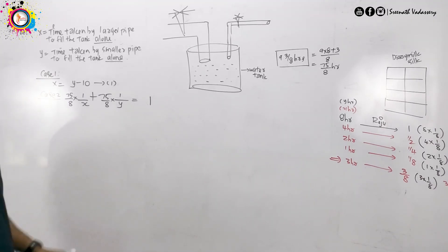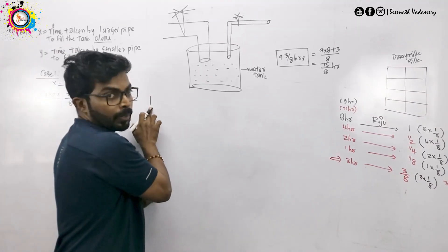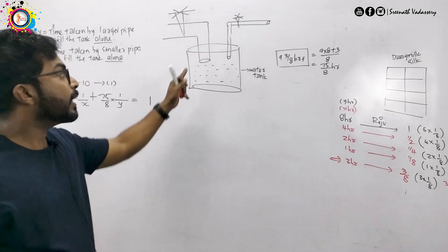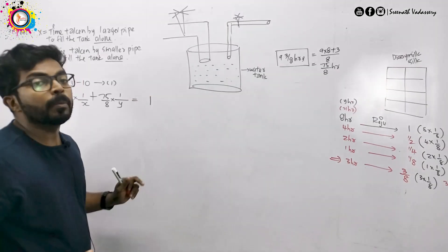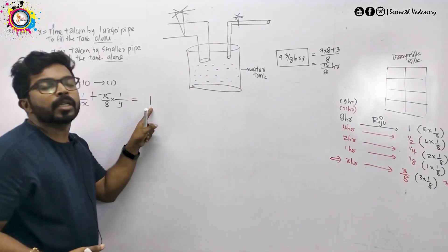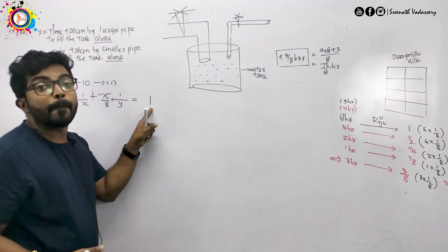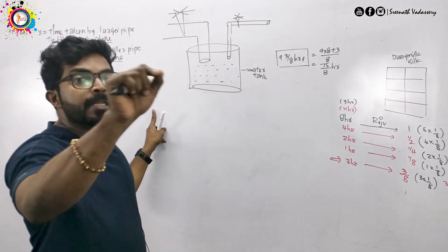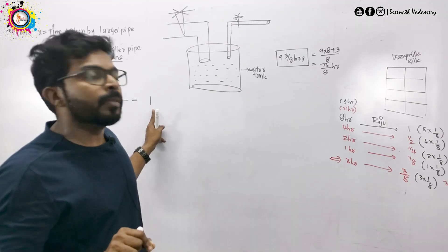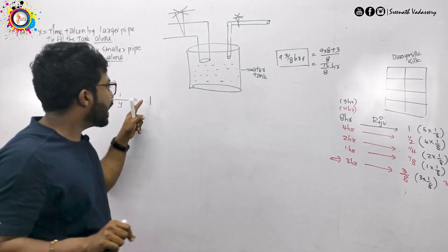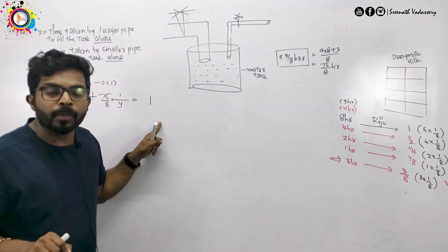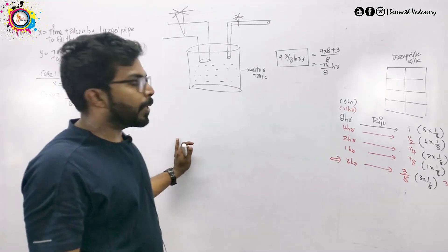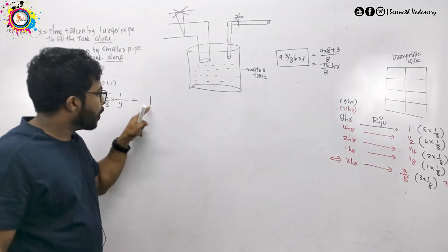Okay, that's the full fill. Half portion of the tank fill is 1 by 2. 75% of the tank fill: 75 by 100 is 3 by 4. 25% of the tank fill: 1 by 4.